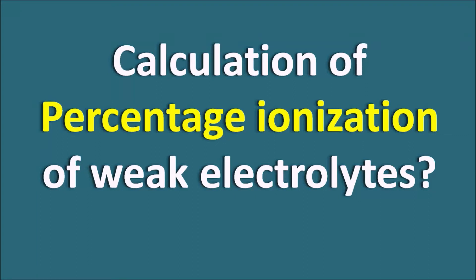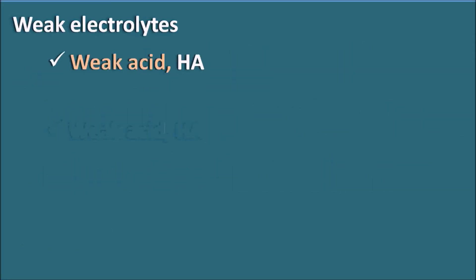Calculation of percentage ionization of weak electrolytes. Let us take a weak electrolyte — a weak acid represented by HA. Because it is a weak electrolyte, it cannot be completely ionized. It shows a chemical equilibrium such that HA is converted into H⁺ and A⁻. This H⁺ can combine with a water molecule to form H₃O⁺, but for simplification we have written the equation as HA converting into H⁺ and A⁻.